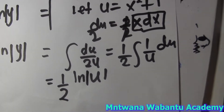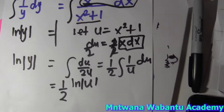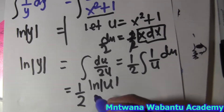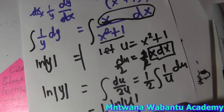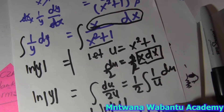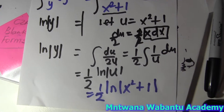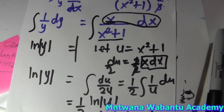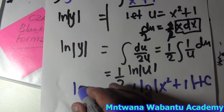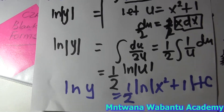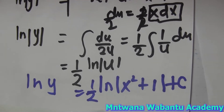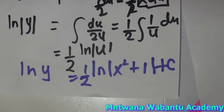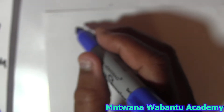Now we place u back as x² + 1, remembering to use absolute value. So the right-hand side becomes (1/2) ln|x² + 1| plus constant C. On the left we have ln|y|. So now we have ln|y| equals (1/2) ln(x² + 1) plus C.